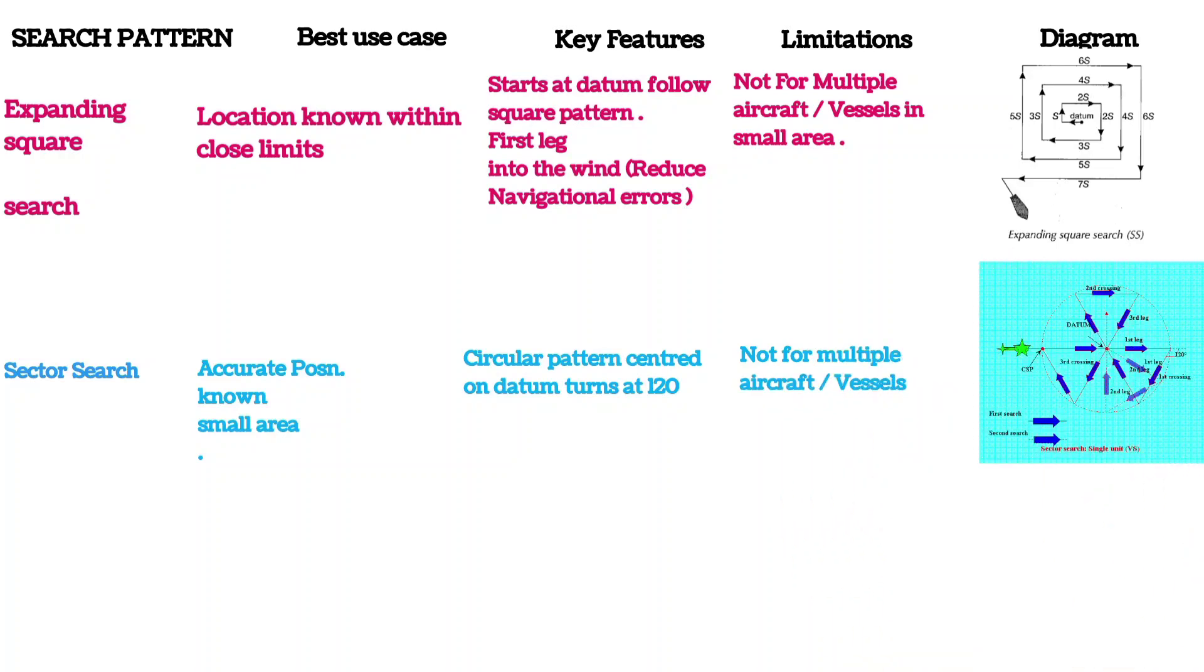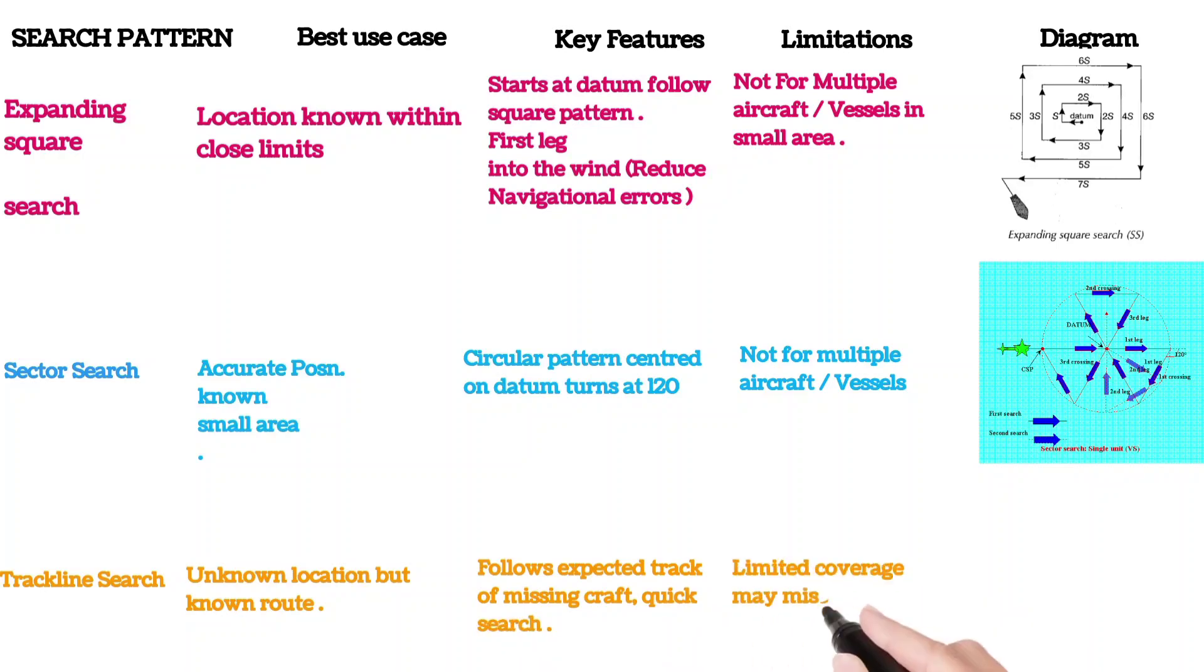Then we have track line search. For this, it is for unknown location but route is known. It follows expected track of missing craft for quick search. Limited coverage may miss off-track objects.